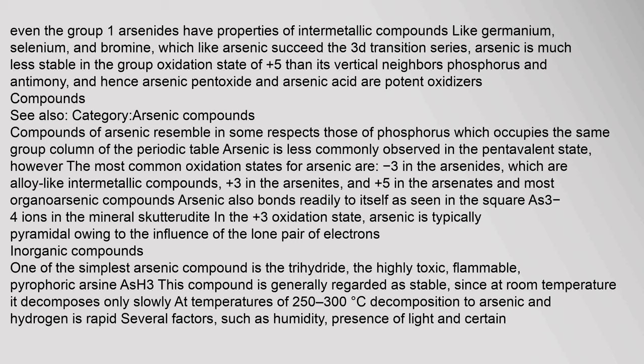Compounds of arsenic resemble in some respects those of phosphorus, which occupies the same group of the periodic table. Arsenic is less commonly observed in the pentavalent state. The most common oxidation states for arsenic are −3 in the arsenides (alloy-like intermetallic compounds), +3 in the arsenites, and +5 in the arsenates and most organoarsenic compounds. Arsenic also bonds readily to itself, as seen in the square As3⁴⁻ ions in the mineral skutterudite. In organic compounds, one of the simplest arsenic compounds is the trihydride arsine (AsH3), the highly toxic, flammable, pyrophoric gas.